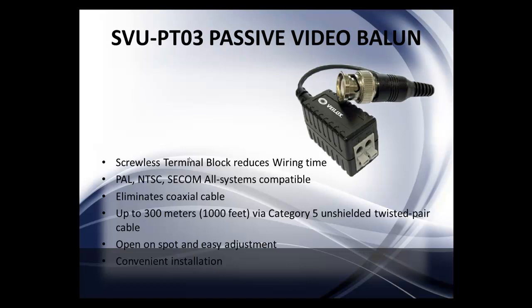Here is another SVU-PT passive video balun variant. As you can see, this one has a pigtail of about 3 to 6 inches to work with. It also eliminates coax cabling and can run up to 300 meters — 1,000 feet — via Category 5 unshielded twisted pair, which is Ethernet cabling. These are very easy to install: you push down the terminals, insert your positive and negative wires, then connect to the active or passive receiver, or another balun on the other side.